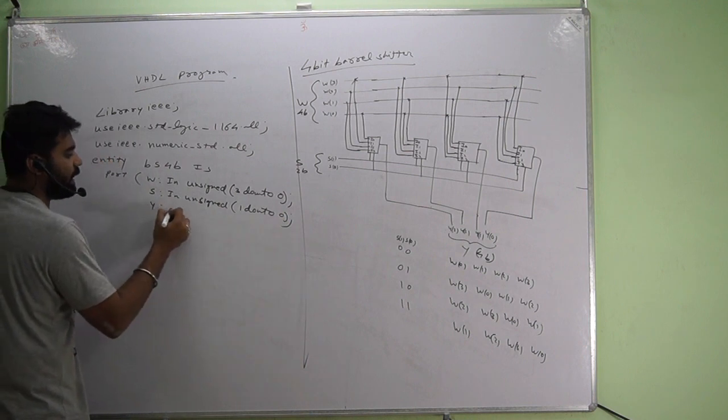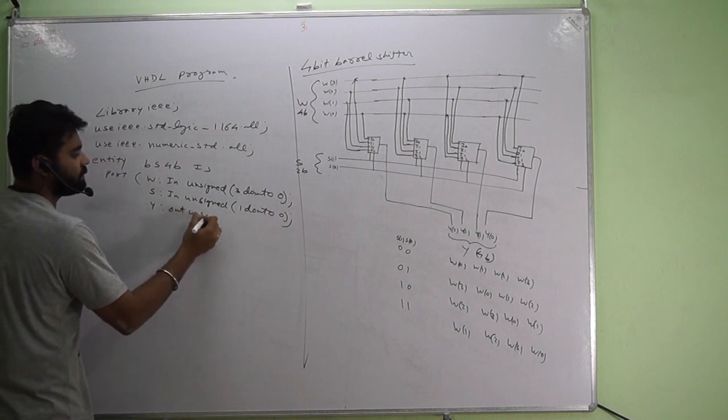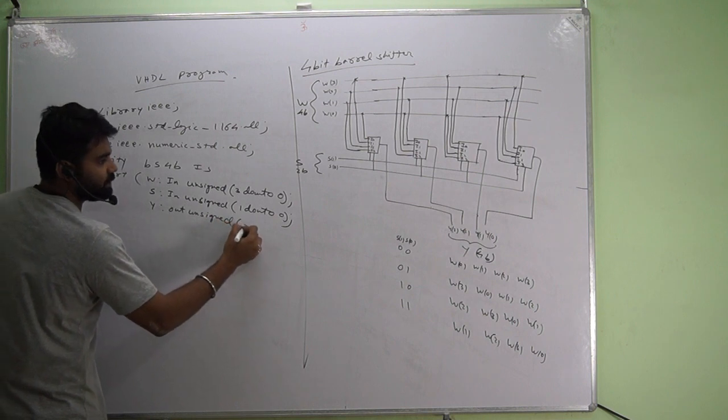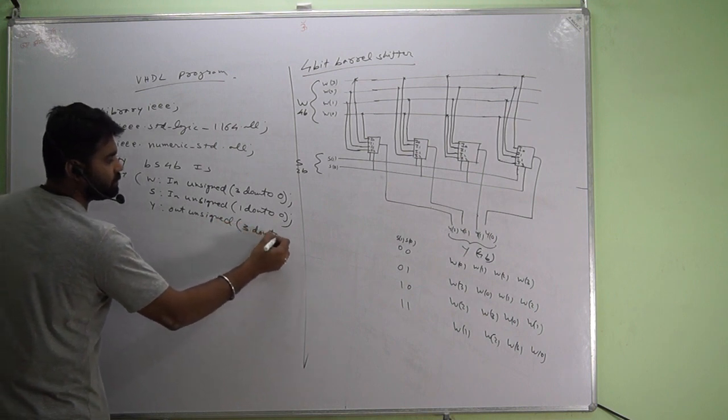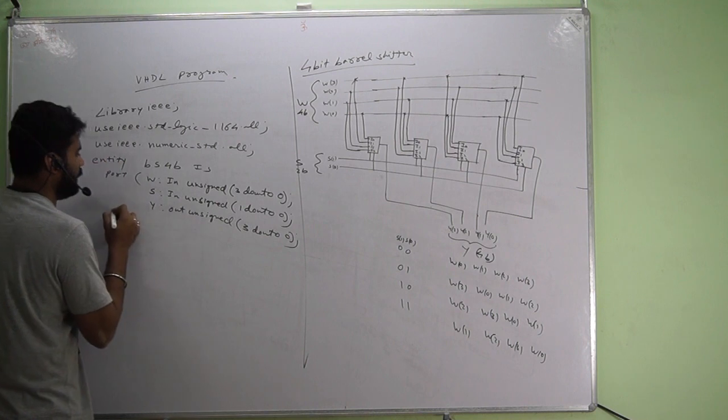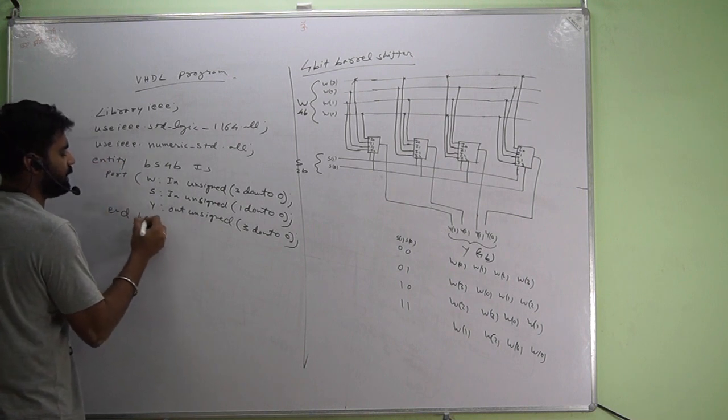And there is y out, unsigned, again 3 down to 0. End bs for b.